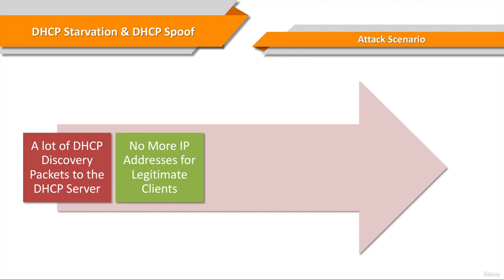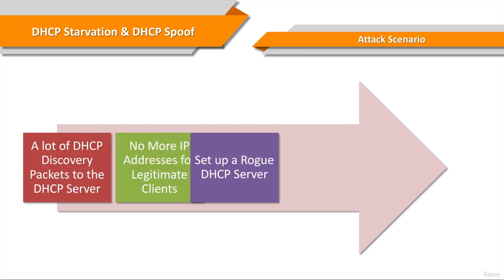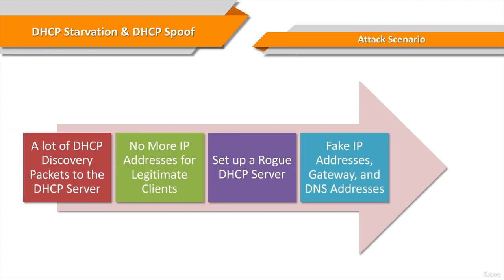DHCP cannot respond to new requests and the clients which cannot obtain IP addresses become out of service. Now we'll set up a rogue DHCP server, which is the only server to respond to client IP address requests. The rogue DHCP server starts distributing IP addresses and other TCP/IP configuration settings to the network DHCP clients. TCP/IP configuration settings include default gateway and DNS server IP addresses. So now we can replace the original legitimate default gateway IP address and DNS server IP address with our own IP address.